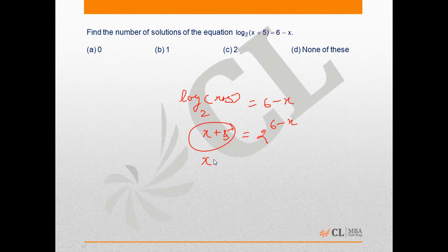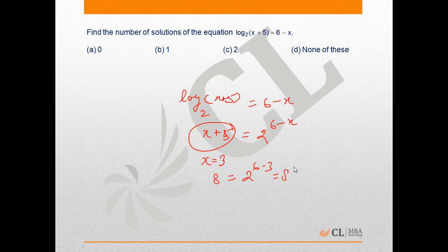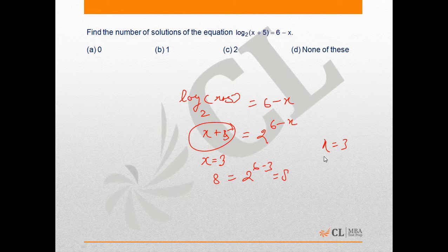By trial and error, when x is 3, left hand side will be 8 and right hand side will be 2 raised to power (6-3) which is also 8, which means x equals 3 is a possible value.